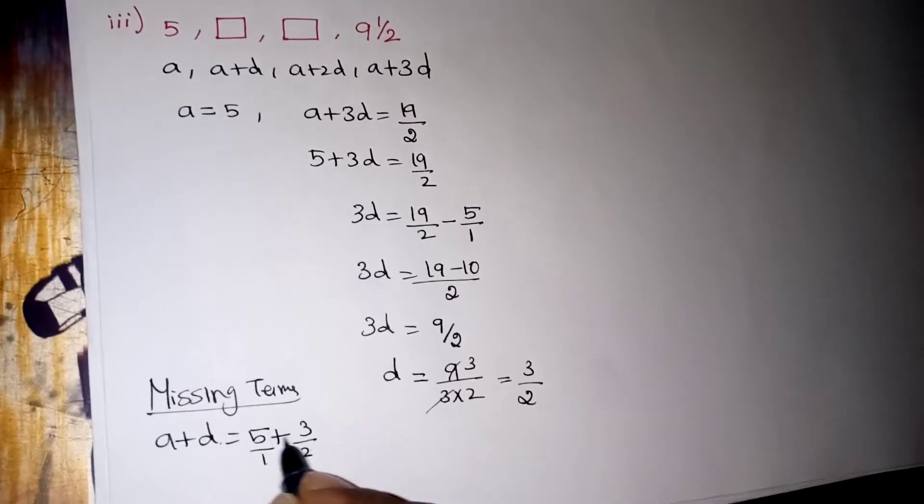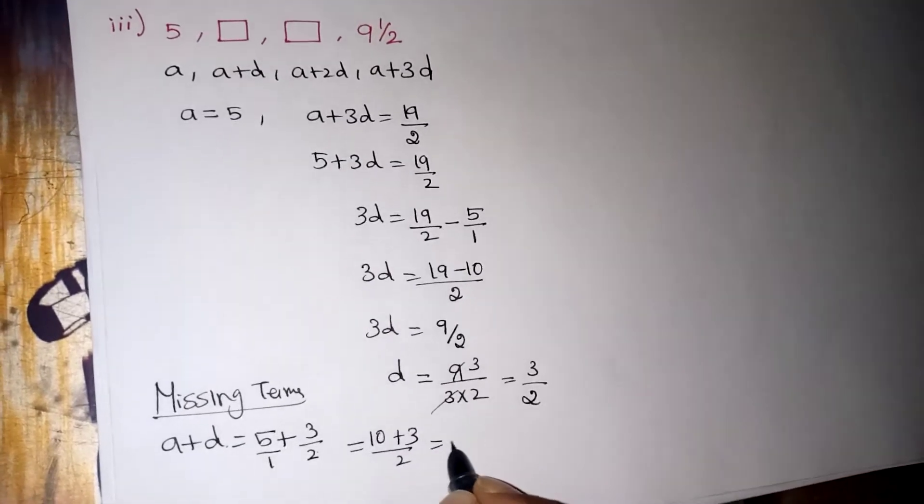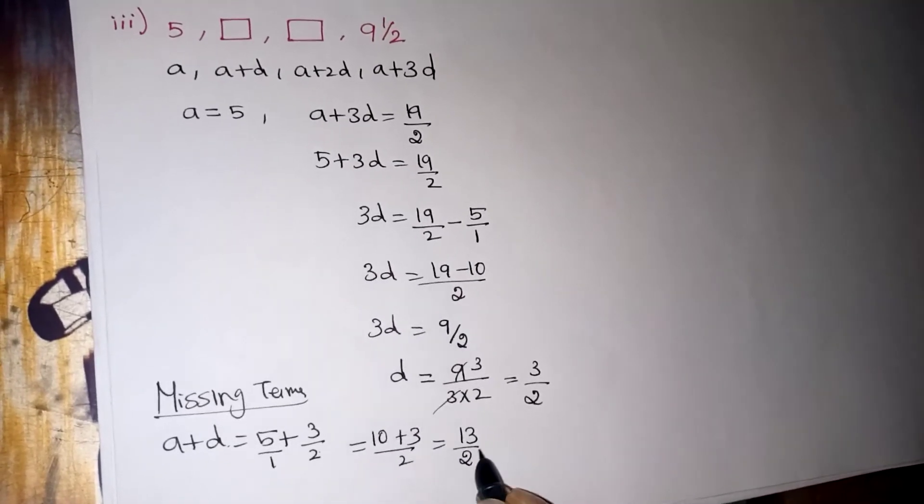That is 13 by 2 is the first missing box.